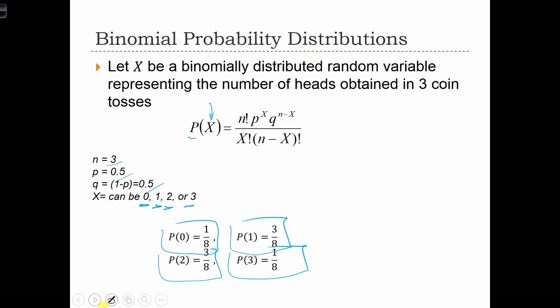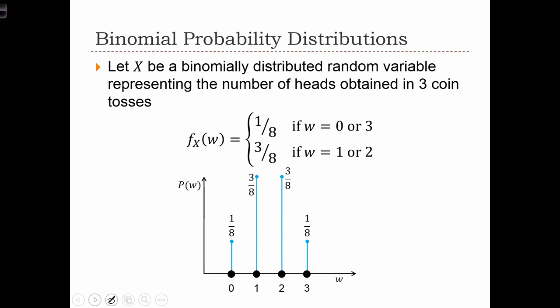And we can then graph these probabilities in a chart. So here we found that the probability that x is equal to 0 is 1/8. The probability of obtaining 1 head is 3/8. 2 heads is 3/8, or 3 heads is 1/8. And here we've drawn the probability distribution function for this binomially distributed random variable.